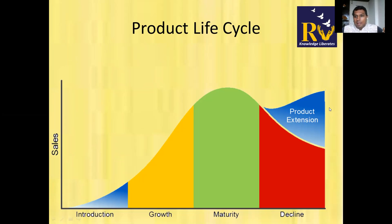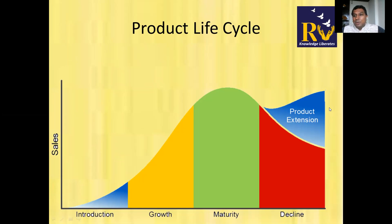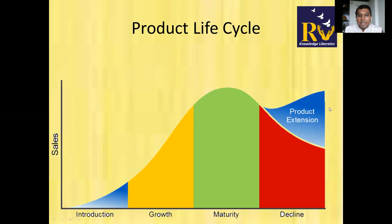So the time span of a particular phase can always be compressed. I asked a question: if you want to increase the time span of one phase, which would you choose — Introduction, Growth, Maturity, or Decline? I got two answers. Some say extend Growth as long as possible, since you're growing and making returns. Others say extend Maturity. Let's evaluate both perspectives.